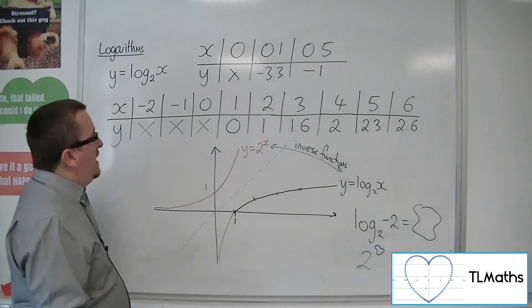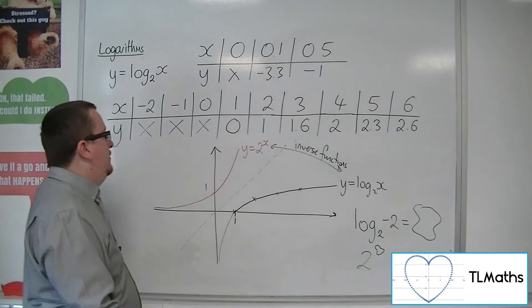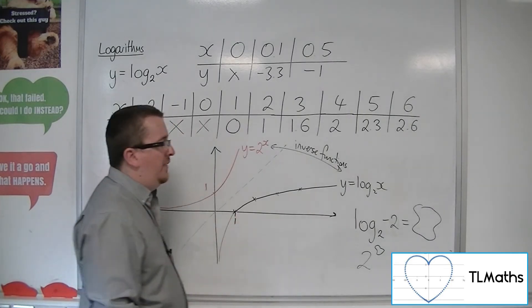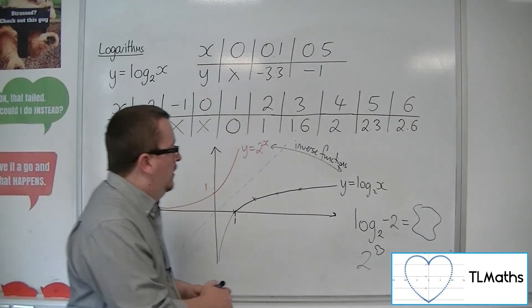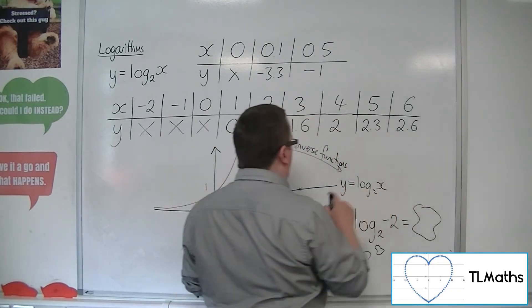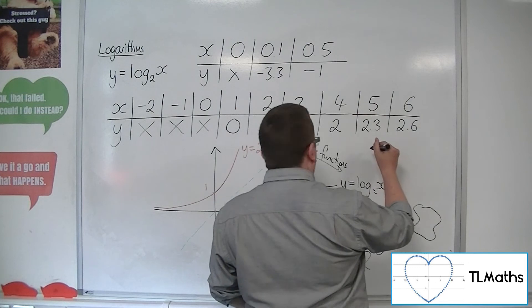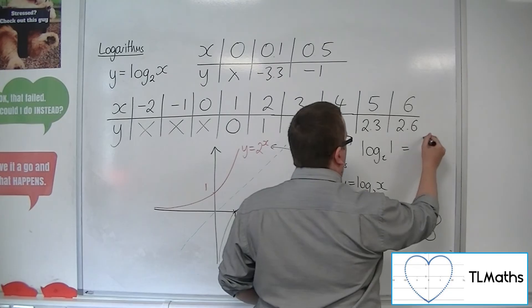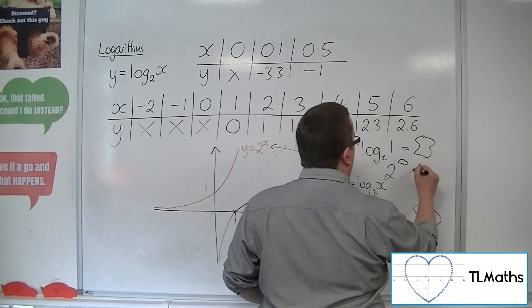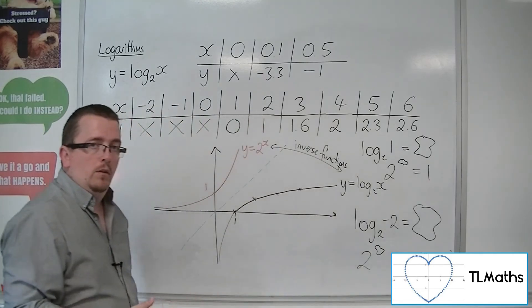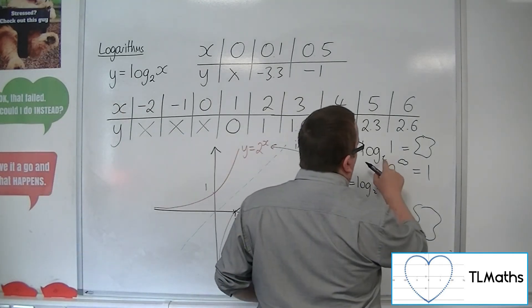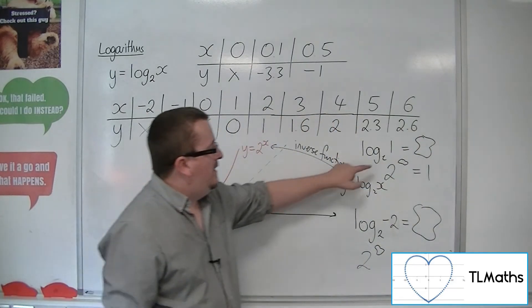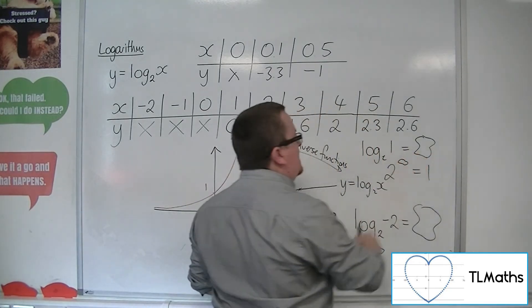So this is what a logarithmic curve looks like. And you need to be able to draw one of those and show that it's crossing the x-axis there at 1. Because as we know, if you have log base 2 of 1 equals something, well, 2 to the something to be equal to 1, well that's got to be 0. So actually log base of any value you like of 1 must be 0, because whatever that value is to the power of 0 will get you that 1.